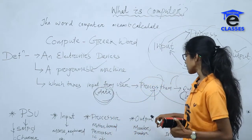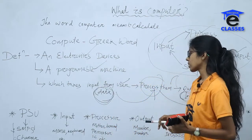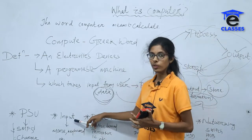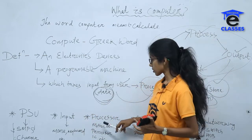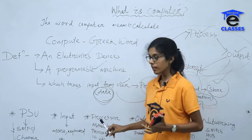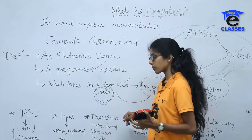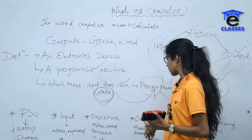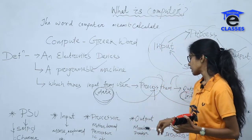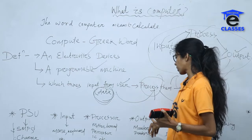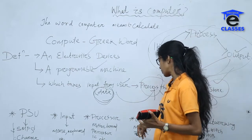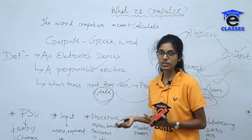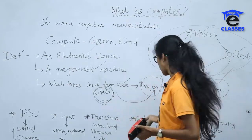After data is input and processed, we get output. Output devices include monitor, screen, printer, and projector — these are the devices we can use for output.